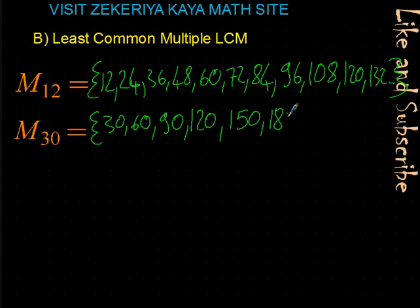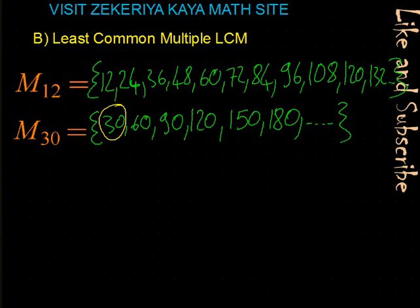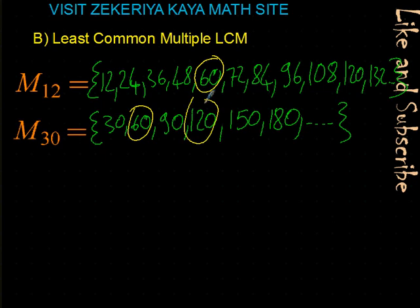From these two lists, which ones are common? 30 is not in the multiples of 12. 60 and 60 are common. 120 and 120 are also common. From these common multiples, the smallest one — 60 — is the least common multiple of 12 and 30.